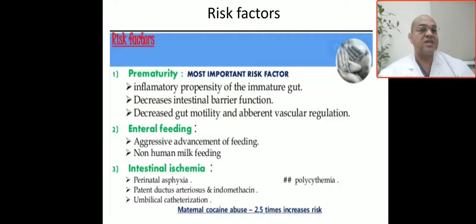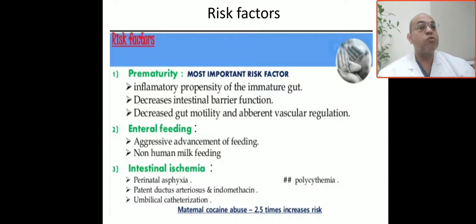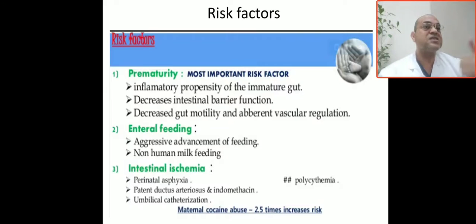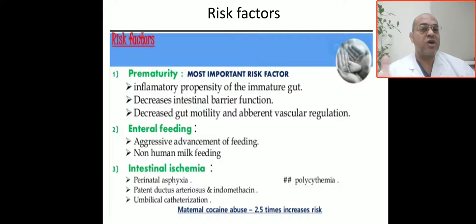The second risk factor is feeding — especially non-human milk formula. Bottle formula increases the risk. The third risk factor here is that the baby required ventilatory support and resuscitation, which are also risk factors. Additionally, polycythemia, asphyxia, PDA, umbilical catheter placement, and maternal medication use also increase the risk.